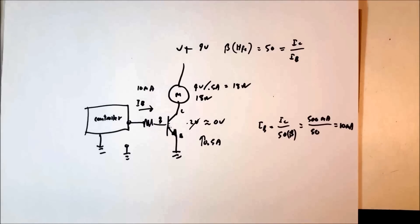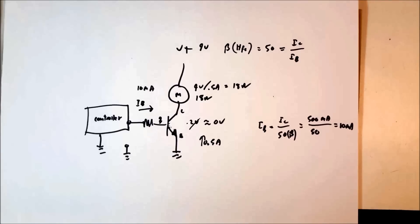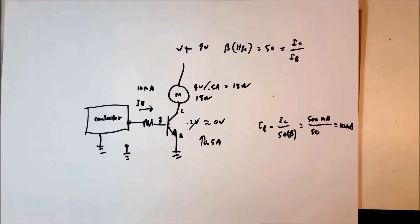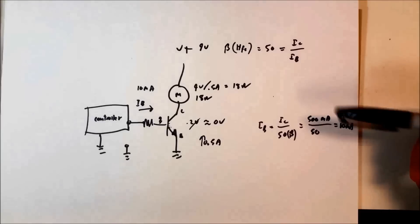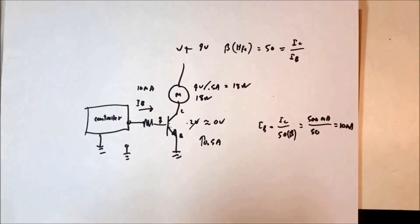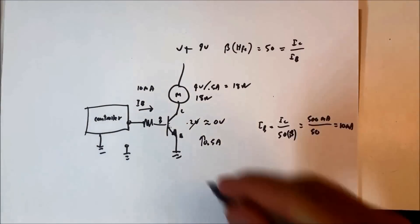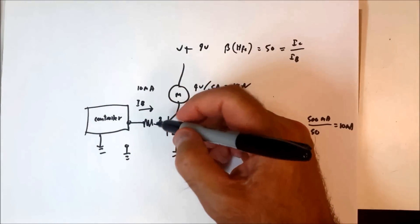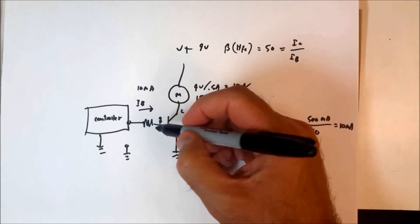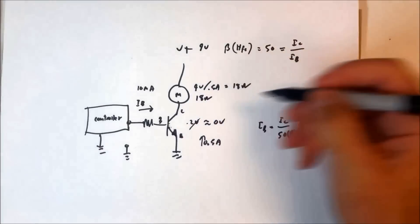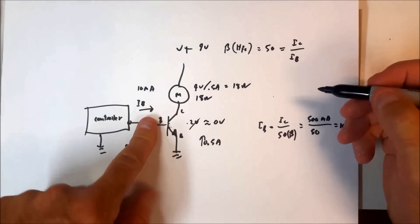In this particular case, we figured out that if our base current is 10 milliamps, we will control 0.5 amps — we will provide 0.5 amps in the circuit. So what we need to do next is we always need to provide a resistor on the input to the base.